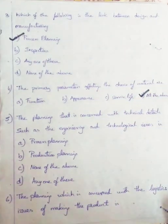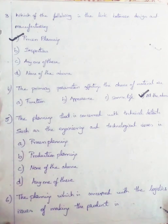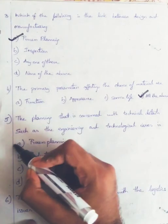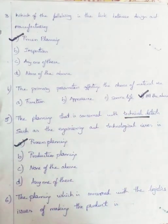Question 5: The planning that is concerned with technical details such as engineering and technology issues is Process Planning. All technical details come under process planning, while all logistics and transportation details come under production planning. So we go with Process Planning, Option A.